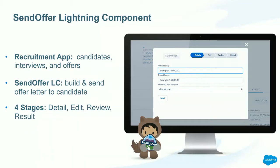Here's our Send Offer Lightning Component — our SPA. It's part of our recruitment application that we use for demos with partners and customers. Our recruitment application covers the vanilla use case of candidates, interviews, offers, and so on. This Send Offer Lightning Component was built so the hiring manager could create and send an offer letter to the candidate. It has four different stages: the Detail Stage, the Edit Stage, the Review Stage, and the Result Stage.